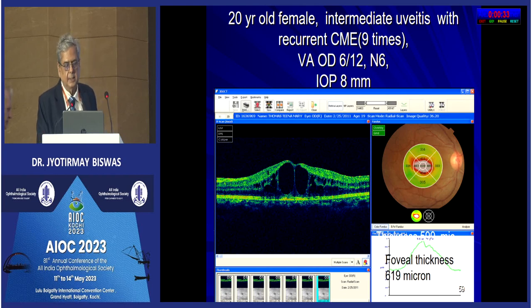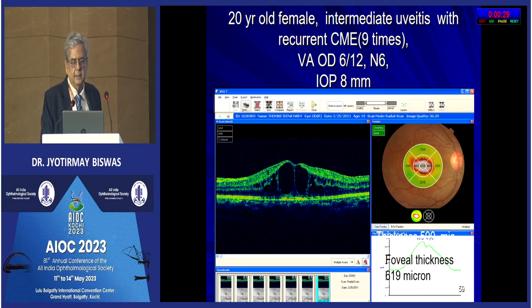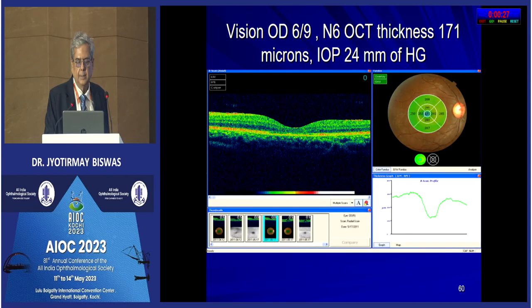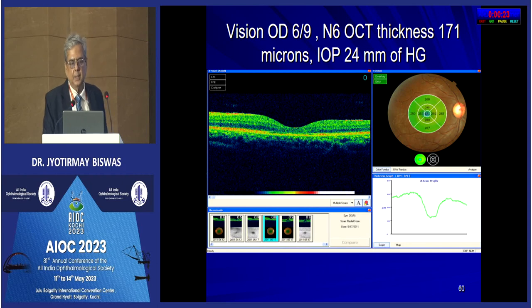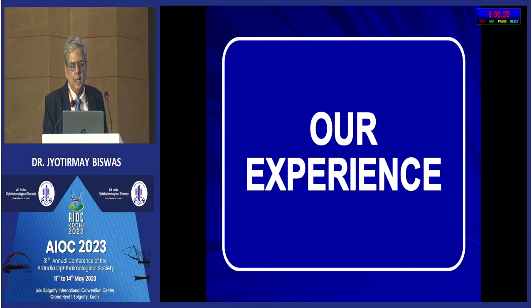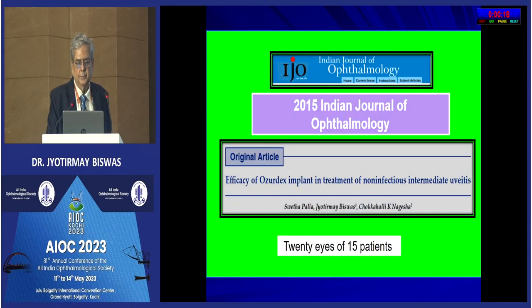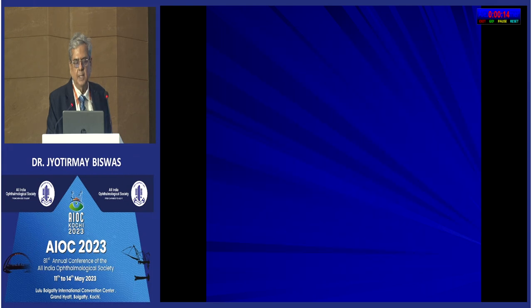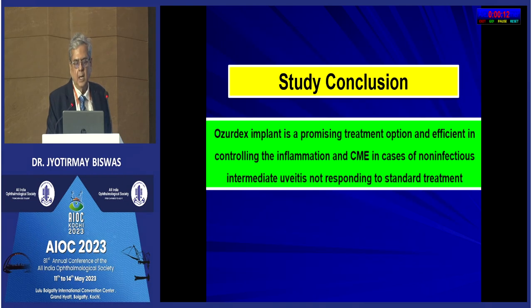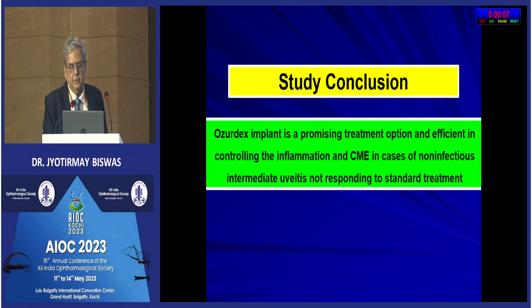The dexamethasone implant works very well in cystoid macular edema — almost magical — with resolution of macular edema within three days. However, there is a chance of rise in intraocular pressure in about 12 percent of cases. Our experience of 20 eyes in 15 patients, reported in the Indian Journal of Ophthalmology, showed good resolution and a promising treatment option for macular edema in intermediate uveitis.